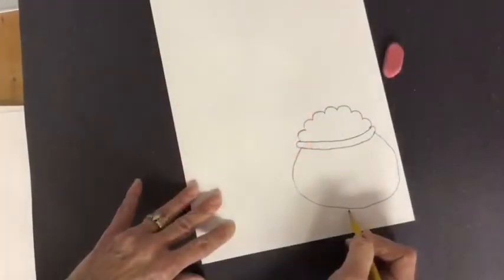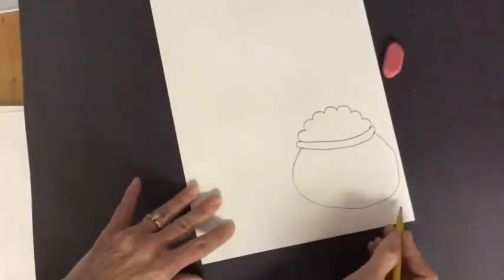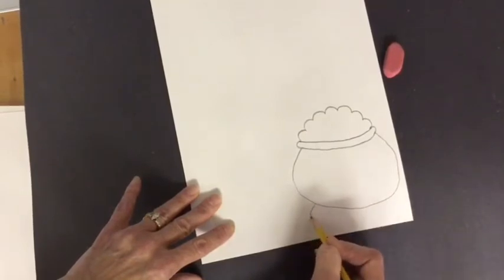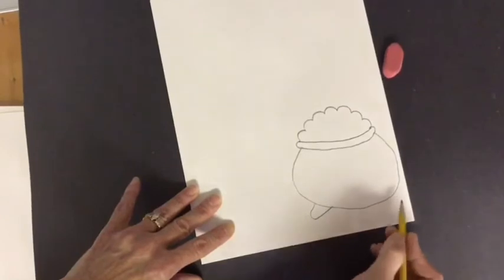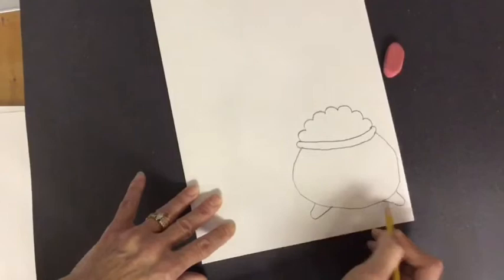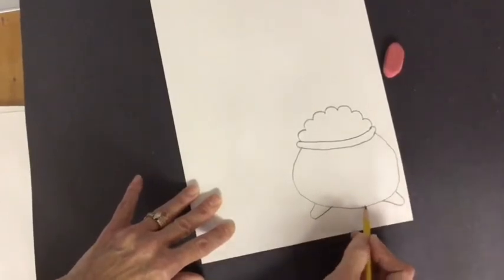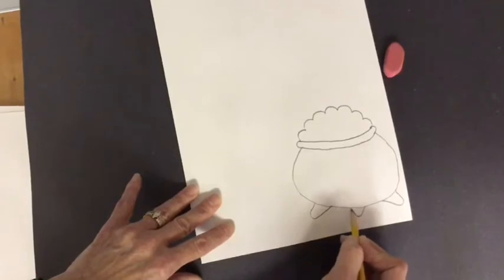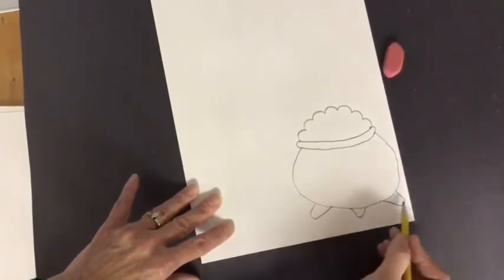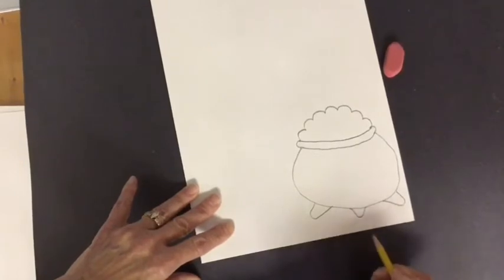I'm going to put some feet on the bottom to hold it up. These will also be curved lines. So I'm going to come out with a curved line and go back to the pot. Look at how slowly I'm drawing so that I can make sure I do a good job. These big black pots usually have three feet. So I'm going to make one, two, three curved lines.